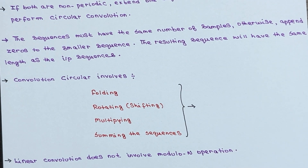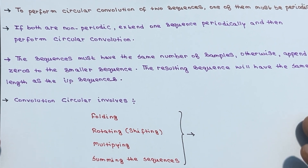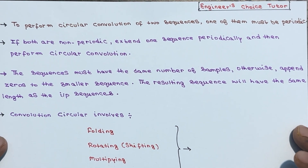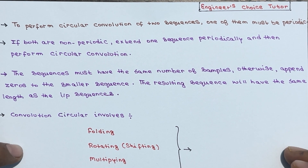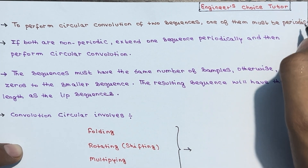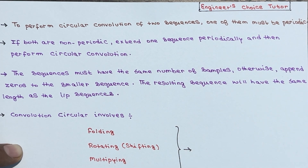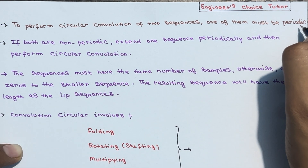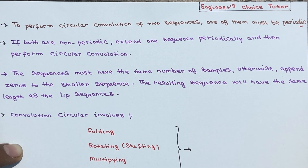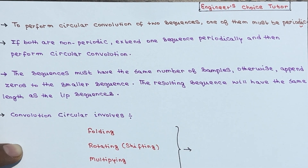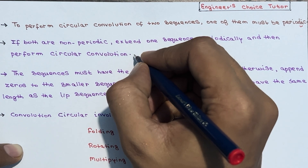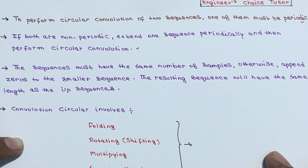Before performing circular convolution, there are some important rules to remember. First, to perform circular convolution of two sequences, at least one of them must be periodic. Second, if both sequences are periodic, extend one sequence periodically and then perform the circular convolution.